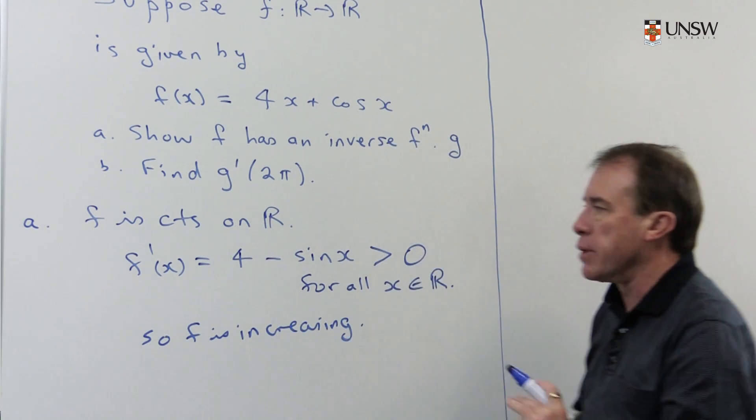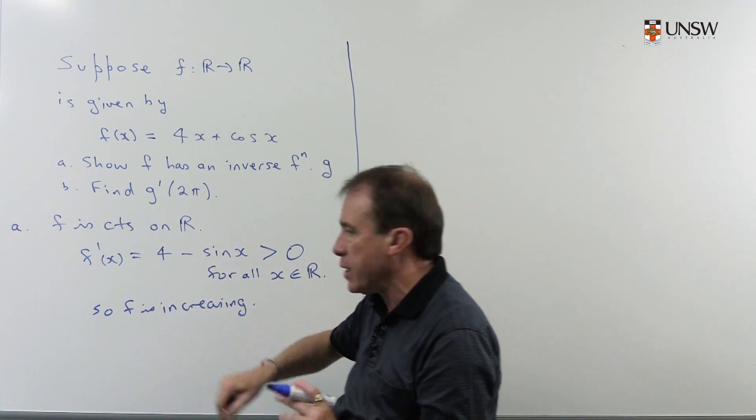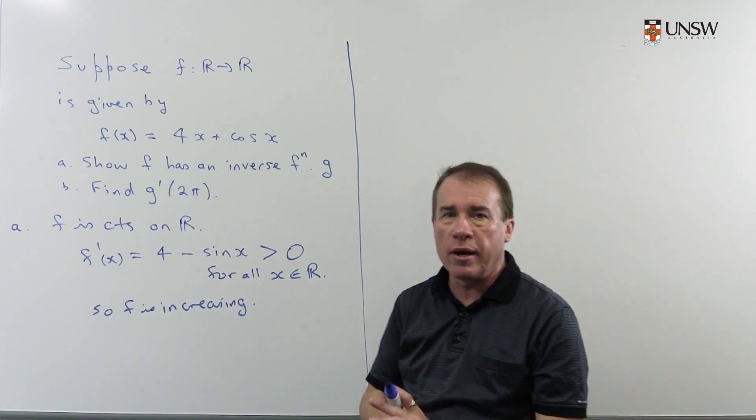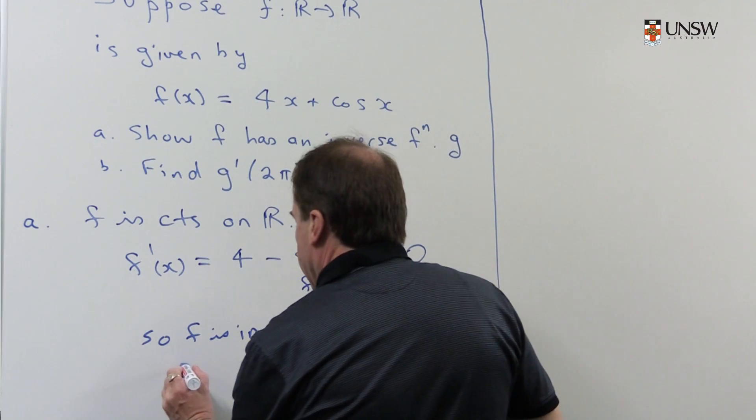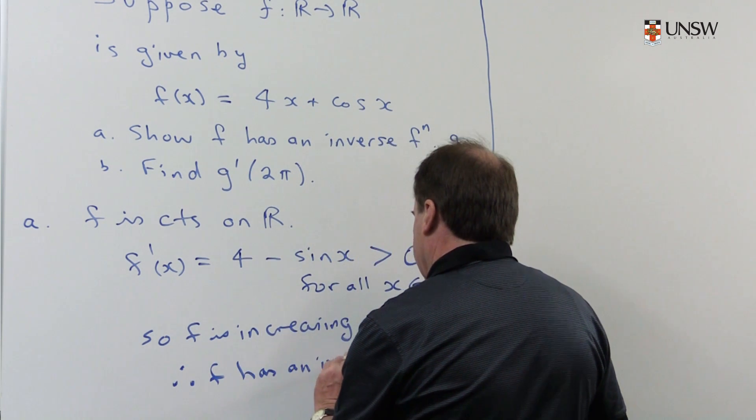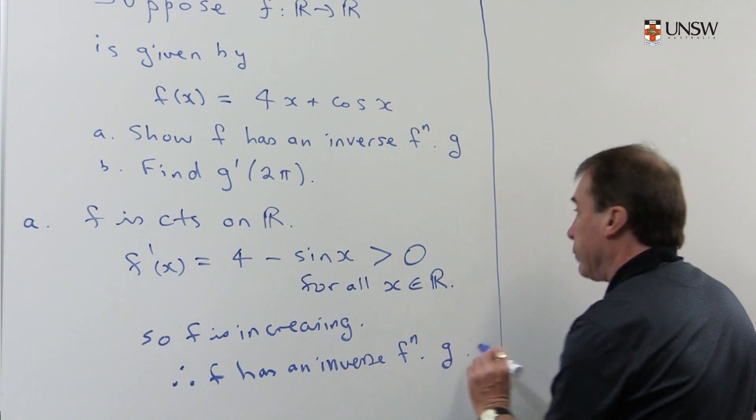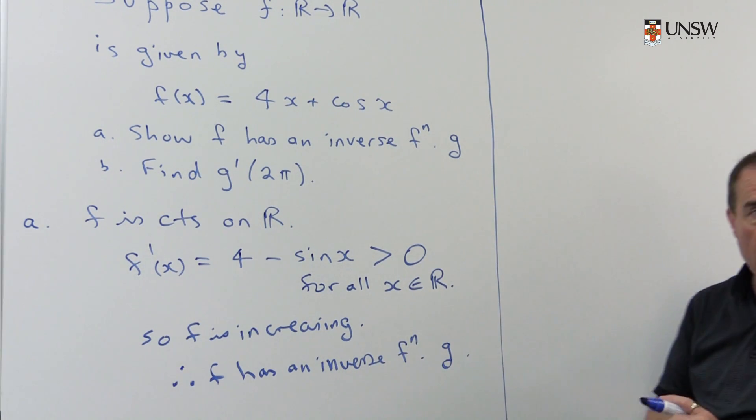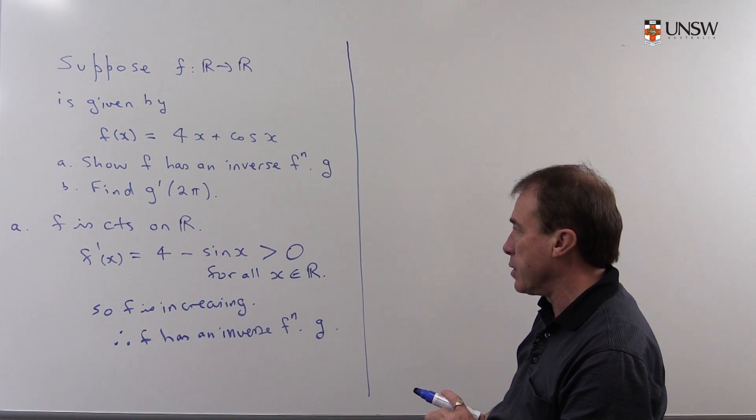And we have a little corollary to the mean value theorem that tells us if the function is continuous and it's increasing, then it's obviously going to be one-to-one, so it's going to have an inverse. So my conclusion is here: therefore, f has an inverse function g. So that's pretty easy. We just calculate the derivative and show it's positive, so the function's increasing.